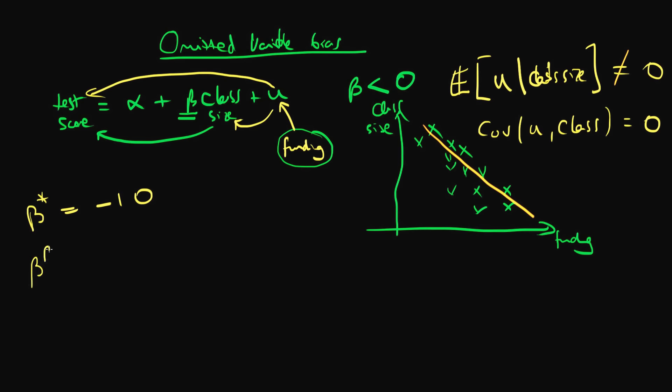So perhaps the true population parameter is only minus five, because of the fact that class size is actually doing some of the work of funding. So that means that it's likely to overstate—in this case, provide an estimate for beta which is lower than the true population parameter.